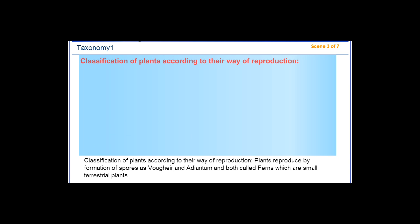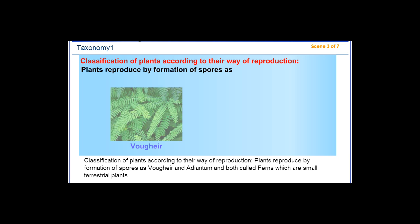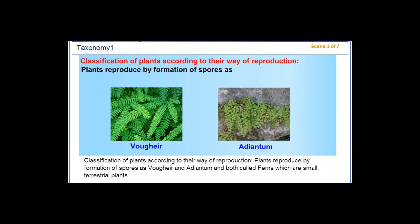Classification of plants according to their way of reproduction: Plants reproduce by formation of spores, such as vulgar and adiantum, both called ferns, which are small terrestrial plants.